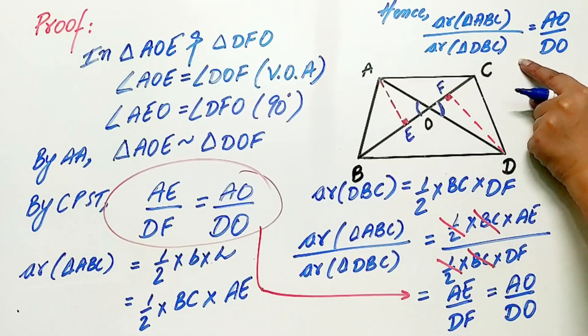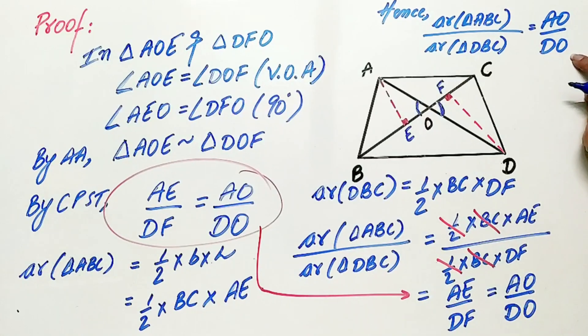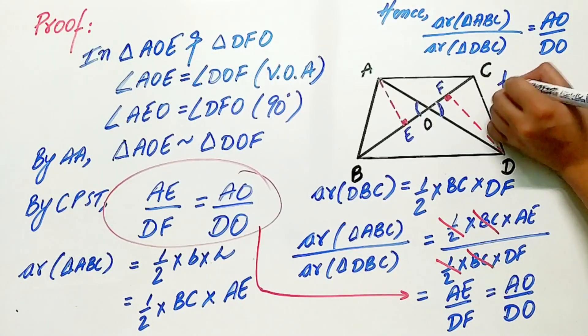Hence, the ratio of the area of triangles is equal to AO by DO. Hence, proved.